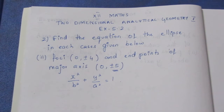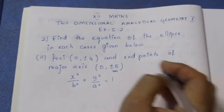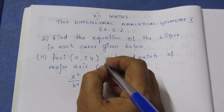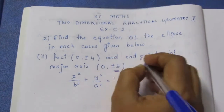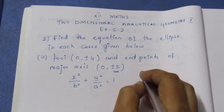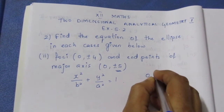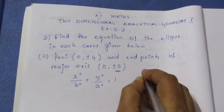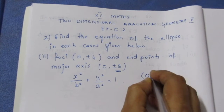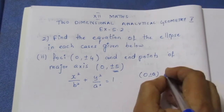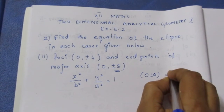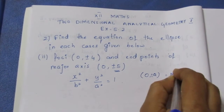To find the major axis value, the end points are (0, ±a). From this we can identify that a is known to us, so a equals plus or minus a, meaning a = 5.